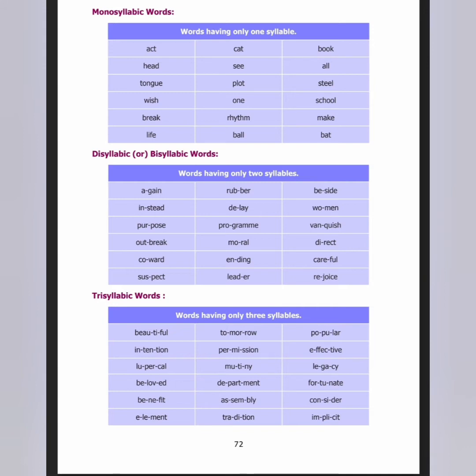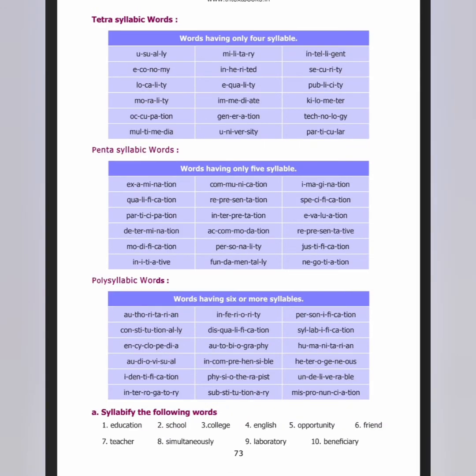Remember, each syllable contains a vowel. Four syllables is called tetrasyllabic. For example, 'economy' — e-con-o-my — and 'morality' — mo-ral-i-ty. When you say the word slowly you can identify the syllables, and notice that in each and every syllable you will find a vowel.